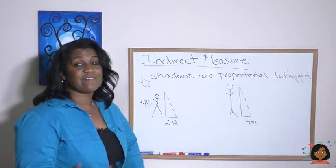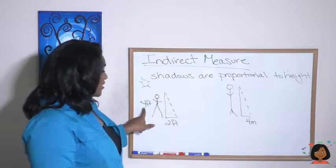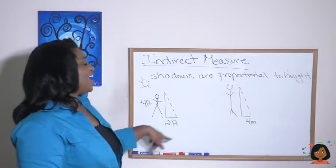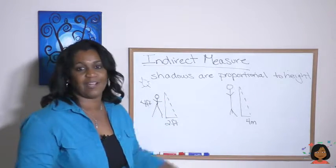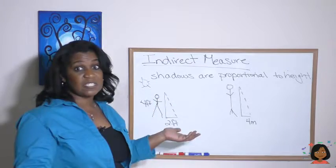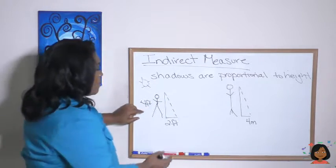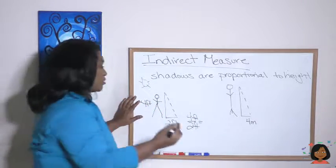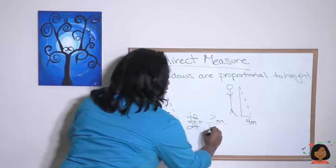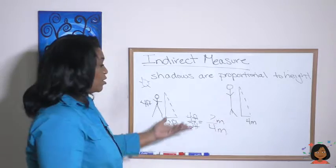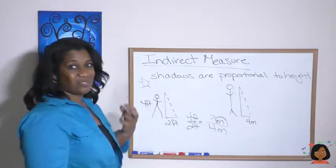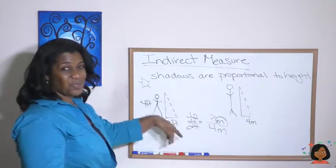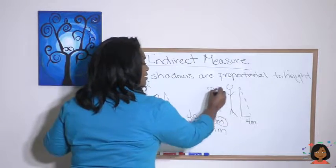The good news is you don't even have to have the same units to work it out. Here we have something in feet and something in meters. Let's say this is you — maybe you're four feet tall — and you have a friend who's wearing stilts and they're measured in meters. We still can set up the same kind of proportion: four feet to two feet equals something in meters — question mark — to four meters. You know that your answer is going to be in meters. Two times what is four? Two times two is four. So four times two is eight. Your friend on stilts is eight meters tall.